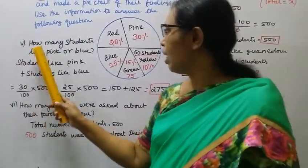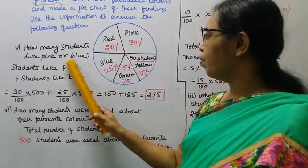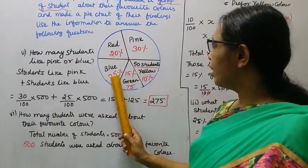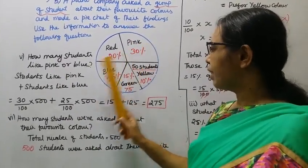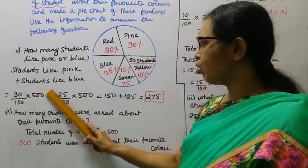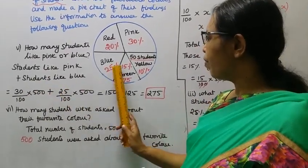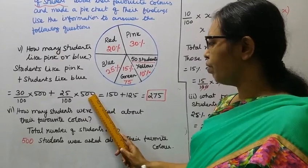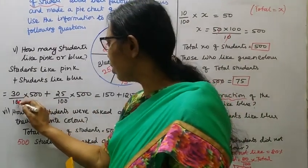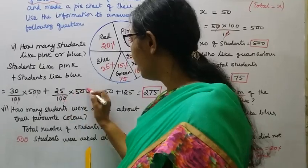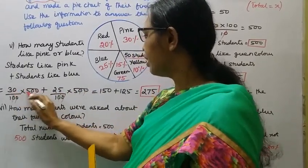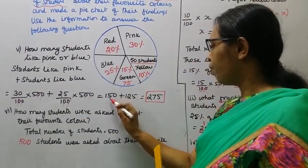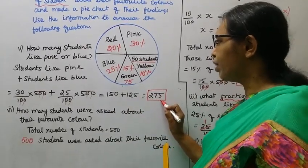How many students like pink or blue? Students who like pink: 30% of 500 equals 150. Students who like blue: 25% of 500 equals 125. 150 plus 125 equals 275. So 275 students like pink or blue.